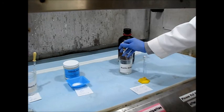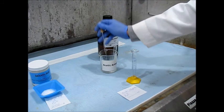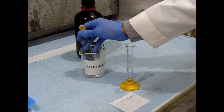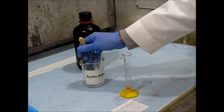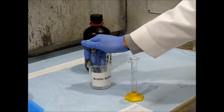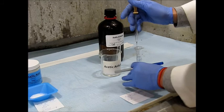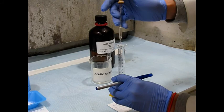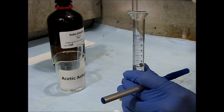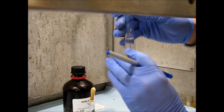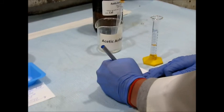So first we're going to get five milliliters of the acetic anhydride. So we're just over four. Awesome. So we have just about 5.1 milliliters.